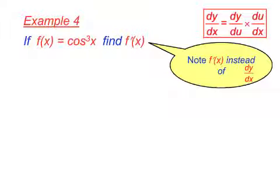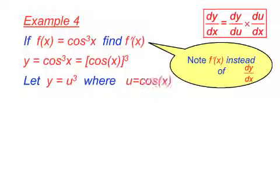Here's another trig function. But note, first, that instead of y in dy/dx, we've got f(x) and f'(x). First, recall that if y equals cos cubed x, that's the same as cos of x all to the power of 3. Using our substitution, y equals u cubed, where u equals cos of x.